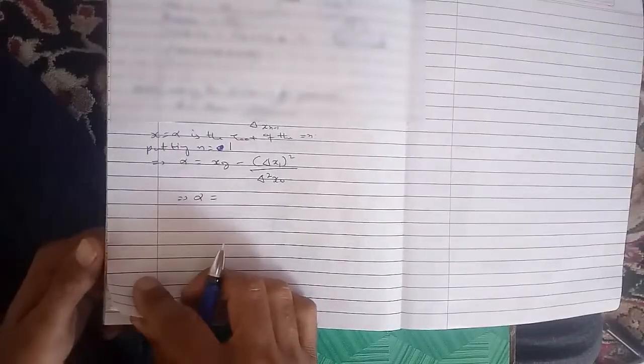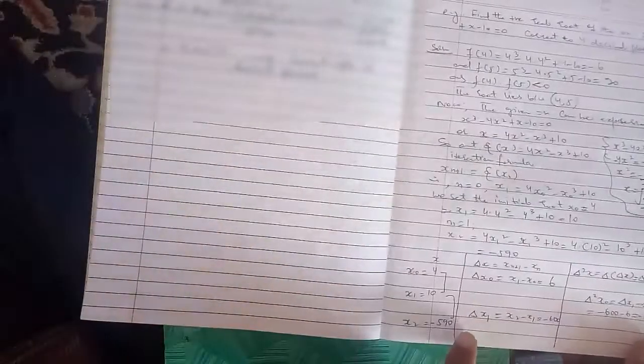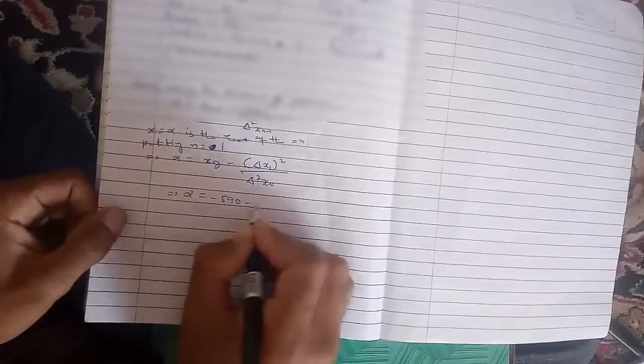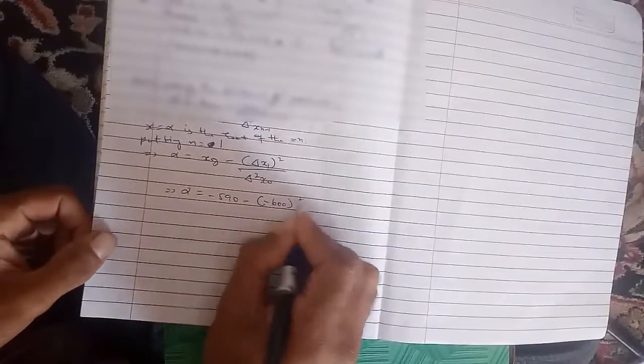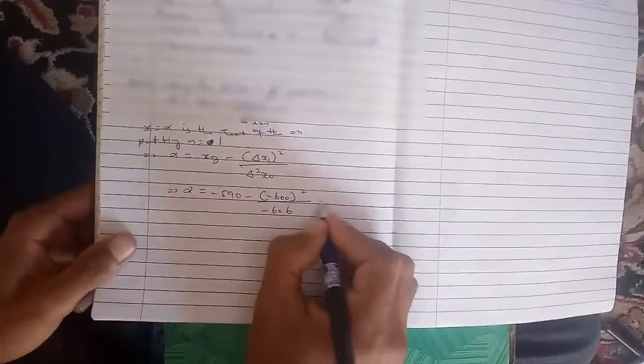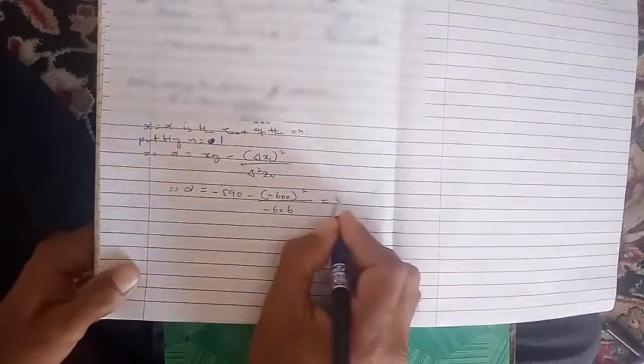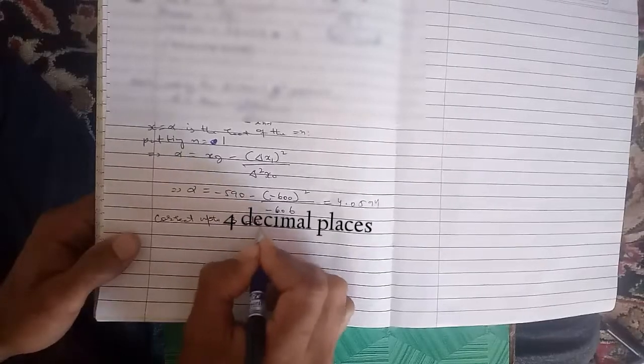So α equals -590 minus (-600)² divided by -606, which comes out to be 4.9... approximately 4.9594 correct to 4 decimal places.